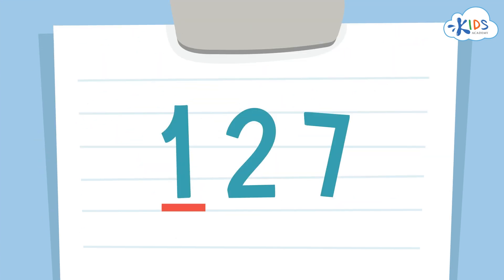When we want to round a number to the nearest hundred, you have to look at the tens place to help you decide to round up or down. I like to underline the place I'm rounding to — the hundreds place — and draw an arrow to the place that will tell me whether to round up or down: the tens place. You always look one place to the right of the place you want to round to.